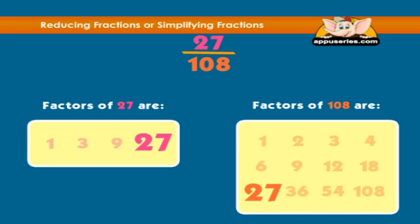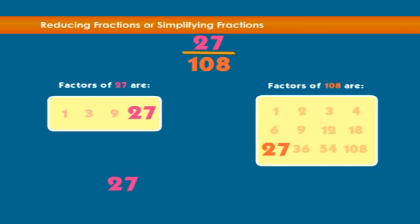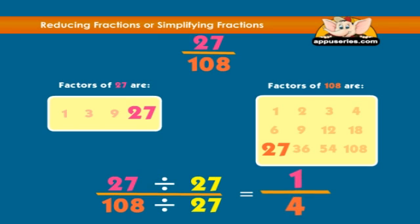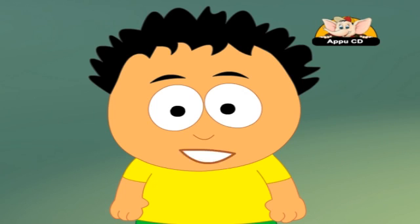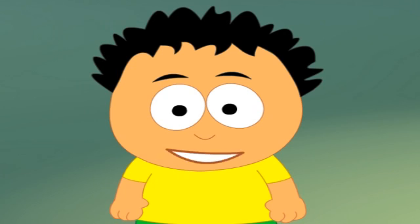If we divide the numerator and the denominator by 27, we get the same answer in one shot: 27 divided by 27, over 108 divided by 27, equals 1 over 4. But if you can't find the HCF, just start dividing out common factors, like we did at first.